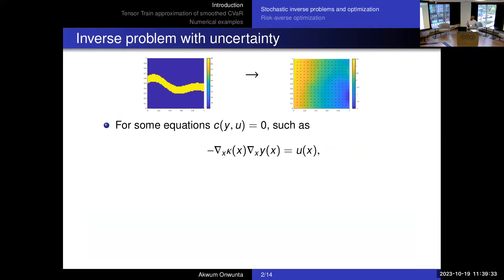We can formulate this as a regularized optimization problem subject to the PDE. Things get more interesting if the PDE depends on some random variables — for instance, the conductivity coefficient may be unknown at all spatial points, so we model it as a random variable for each point. A collection of these forms a random field. In that case, we're solving a stochastic optimization problem, and the standard way is to minimize the expected value of the objective, since the PDE solution Y is now stochastic.